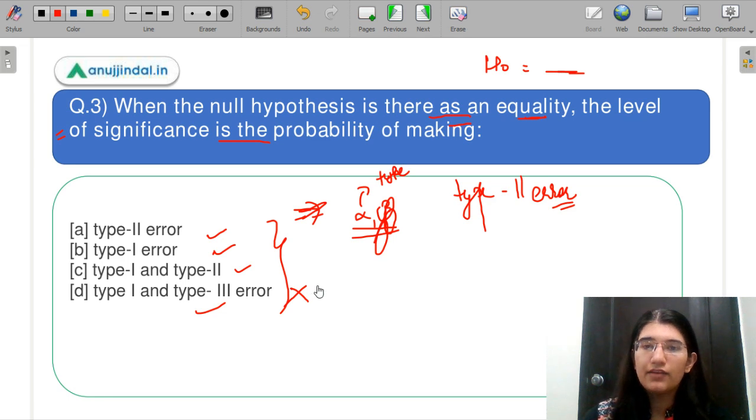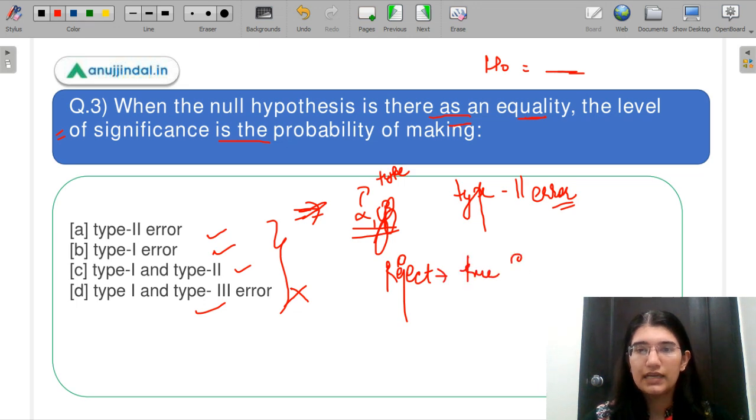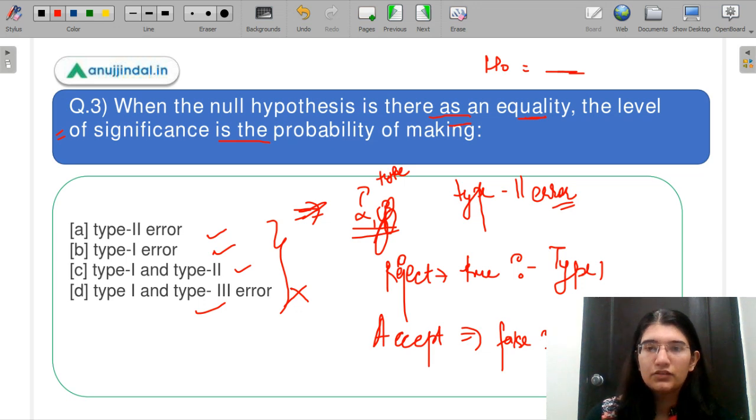When you make a type 1 error, when your H0 is true and still you are rejecting it. And you make a type 2 error when your H0 is true but you accept it. Toh agar reject kar dete hain aap jab woh true hai, toh aap kaunsi error banaate hain? Type 1 error. Aur agar aap accept kar dete hain, if you are accepting it when it is false, then you make a type 2 error. So do let me know in the chat box, what do you think is the correct answer here? So guys correct answer is B.